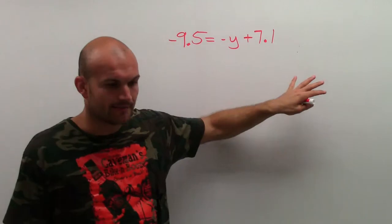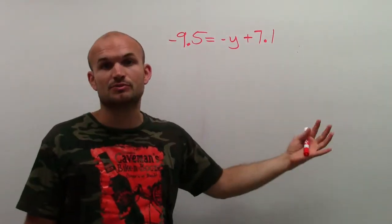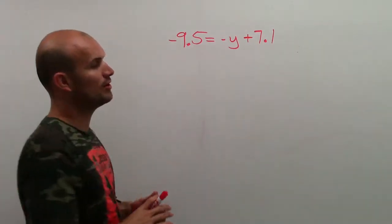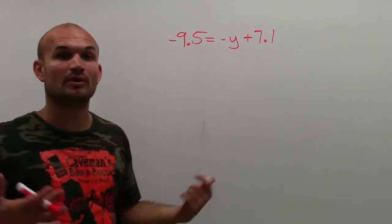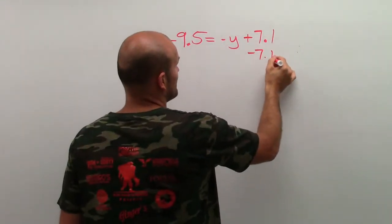So again, remember, our reverse order of operations tells us that we need to undo addition and subtraction before multiplication and division. So I need to look at my 7.1 and say, what is that doing to my variable? Well, it's adding. So therefore, I need to subtract. So I'm going to subtract 7.1,